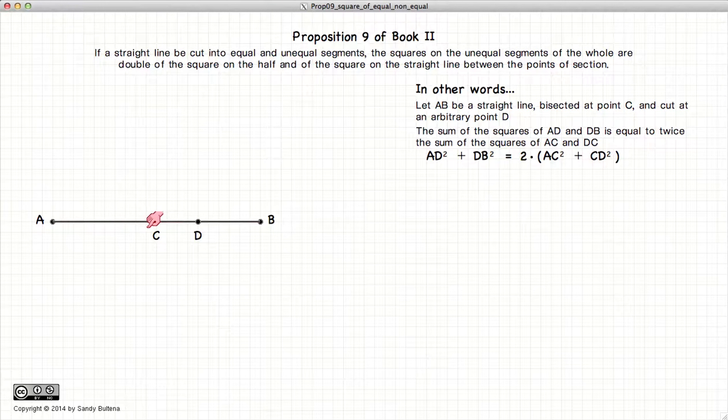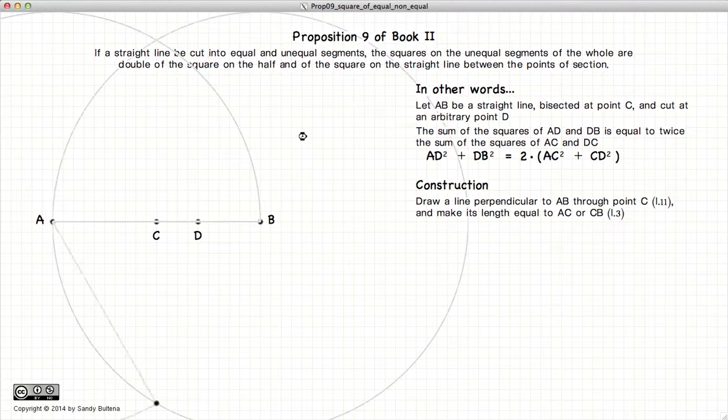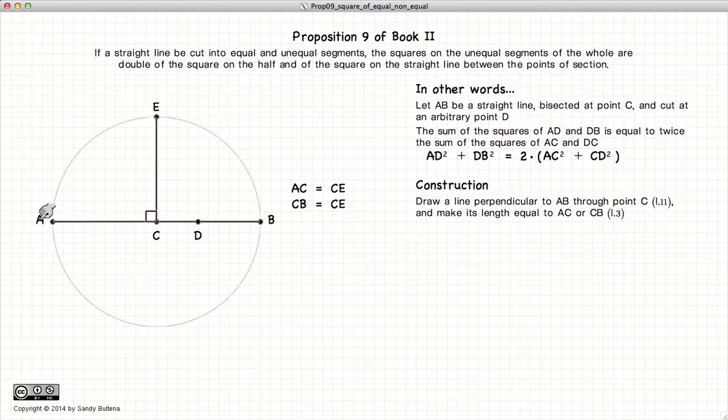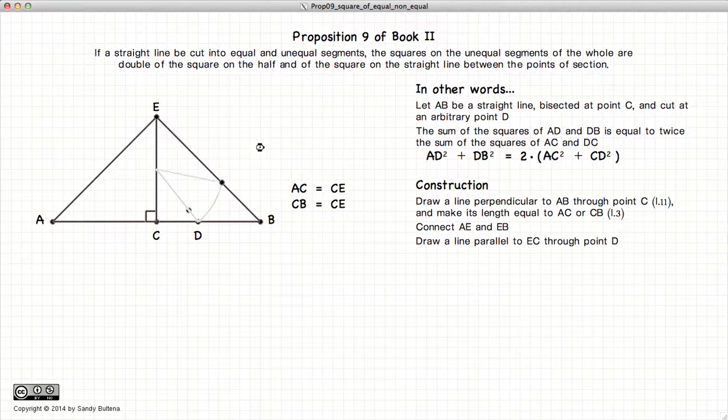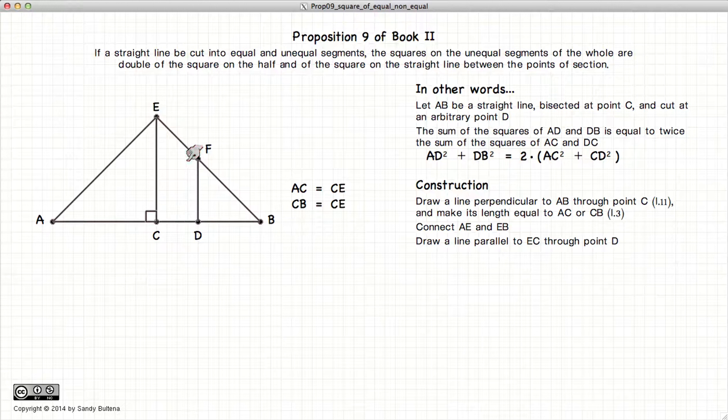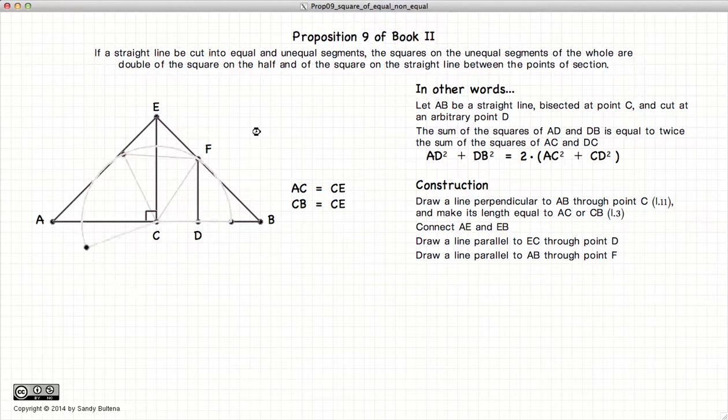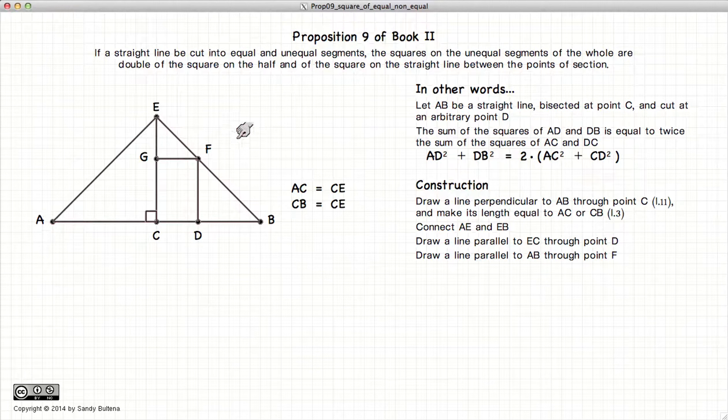So the first thing we're going to do is draw a line perpendicular to AB through point C and define point E such that AC is equal to CE. Next we will connect the lines between AE and EB. Now we will draw a line parallel to CE through point D, draw a line parallel to CD through point F, and finally draw a line between points A and F.